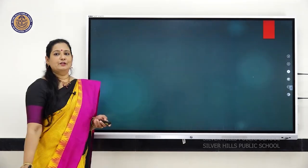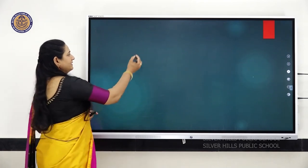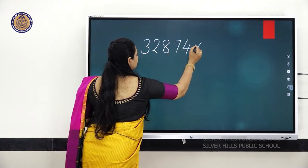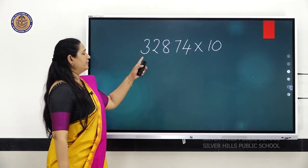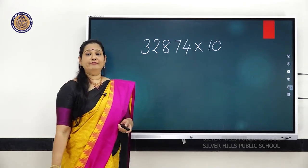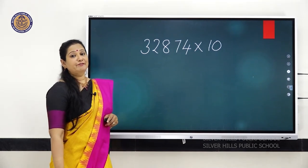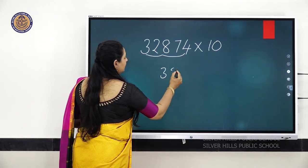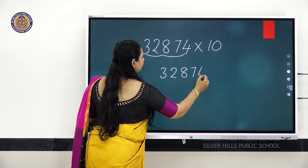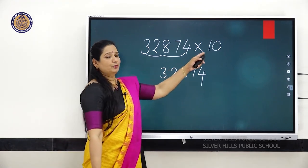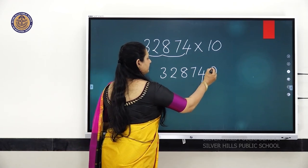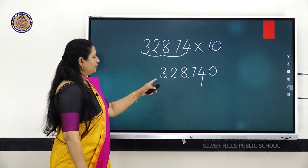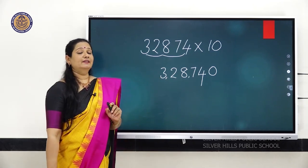Let's do one example. Number 32,874 multiplied by 10. First, write the number — 3, 2, 8, 7, 4 — and you are going to add that extra zero towards its right side. After writing that, you use commas to divide it according to the period. So your answer will be 3,28,740.